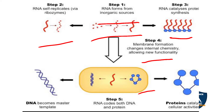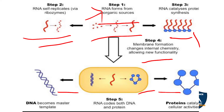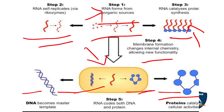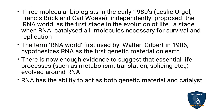One part of RNA becomes proteins and another part assists in DNA formation. So RNA is the main point — it is formed from inorganic sources. With the help of ribozyme enzyme, RNA is self-replicating; it is also ready for protein synthesis, and it allows various functions. It codes for DNA and protein synthesis. This is the RNA world, and this diagram is not in your book.